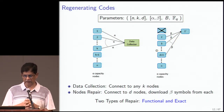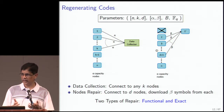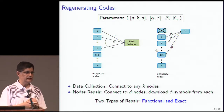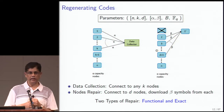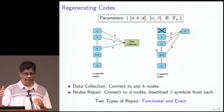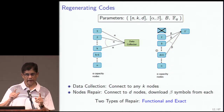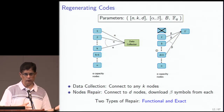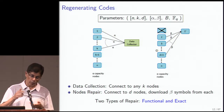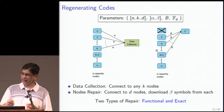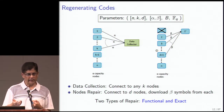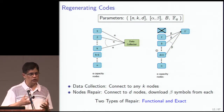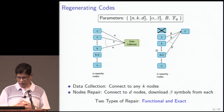The parameter B is the file size — the total amount of data stored across the network. There are two types of repair: functional repair, where when a node fails you repair it ensuring only that the remaining network still behaves like a regenerating code; and exact repair, where the replacement node stores exactly what the failed node stored. Exact repair is preferred because it gives you a stationary network where you know what each node stores, rather than having to dynamically track changes.